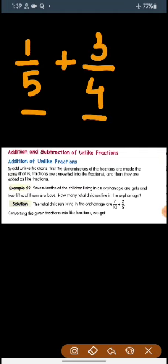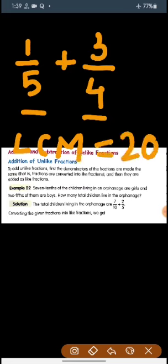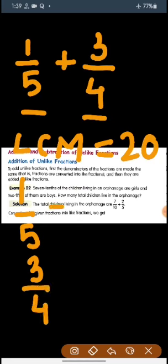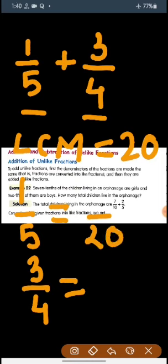So the LCM of 4 and 5 will be 20. We have taken the LCM — this is the first thing we need to do. The second thing we need to do is make equivalent fractions with denominators equal to the LCM.